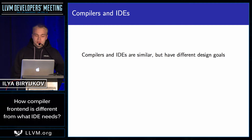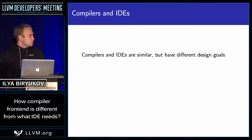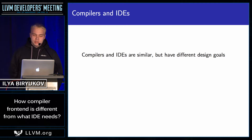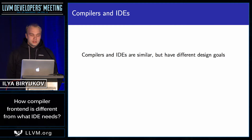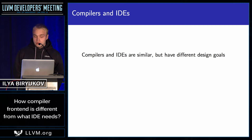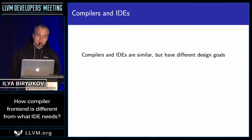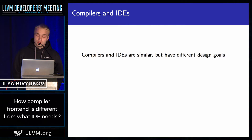Compiler frontends and IDEs seem very similar. They both do the same thing, right? They parse C++ code and try to make sense of it. So it's tempting to reuse an existing compiler frontend like Clang in an IDE. That's certainly possible, but you have to consider that compilers and IDEs have different design goals.